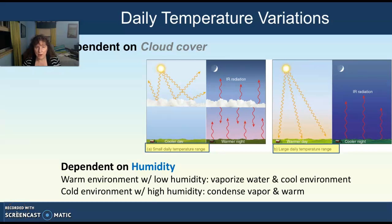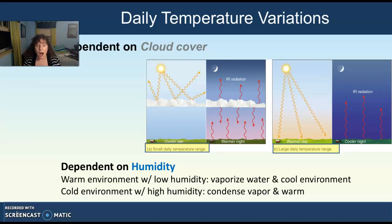We talked about temperature variations that can really damage crops. Now we're going to talk more specifically about those temperature variations and why they occur. These temperature variations can be dependent on cloud cover. For instance, cloudy nights are warmer than clear nights. Conversely, cloudy days are cooler than clear days.